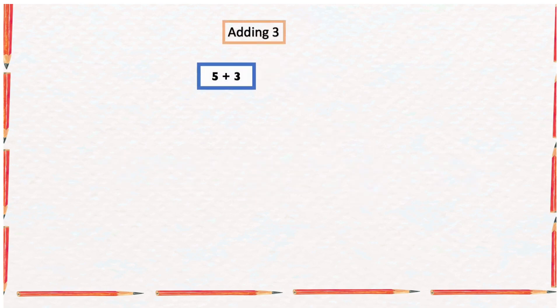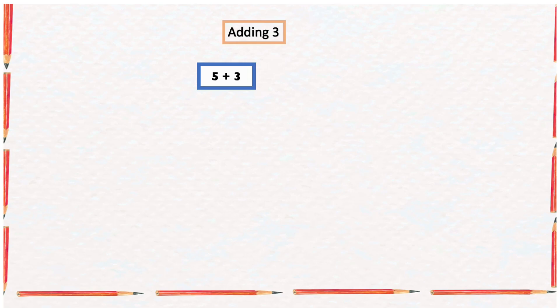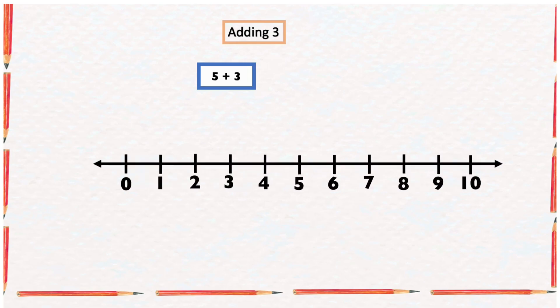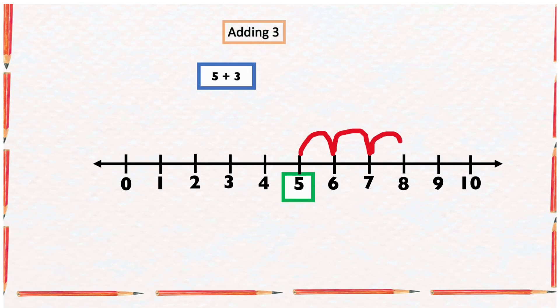Here we have five plus three. Remember, we are just adding the number three to other numbers. Using our number line, we start from number five and count three numbers forward: one, two, three. It ended at number eight, so five plus three equals eight.